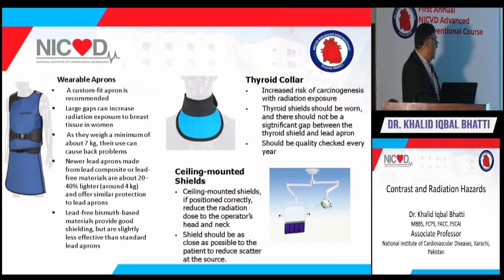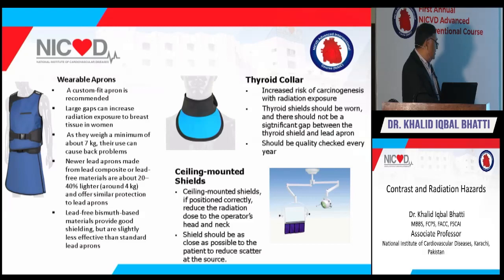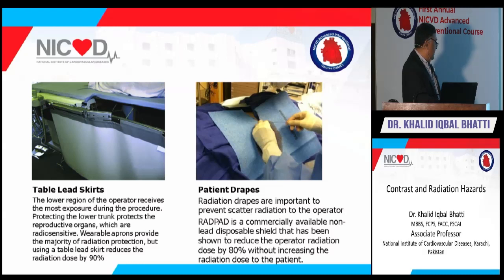Wearable custom-fit aprons are recommended. Modern lead aprons have been lightened by about 40% — from approximately 7 kg down to about 4 kg — reducing back problems. Newer basement-based materials and ceiling-mounted shields also help reduce radiation exposure. A thyroid collar must be worn to prevent thyroid cancer. Table lead and patient drapes are important to prevent scatter radiation reaching the operator.